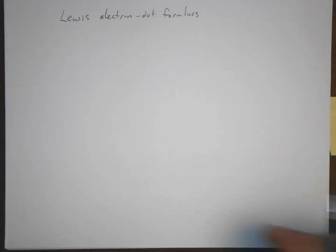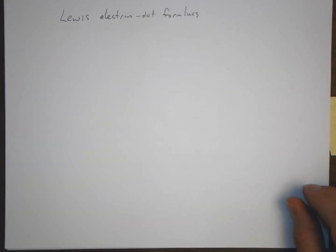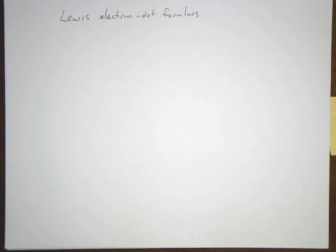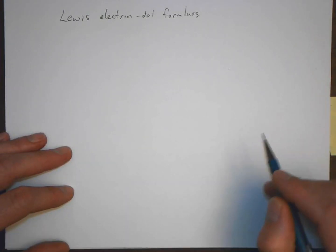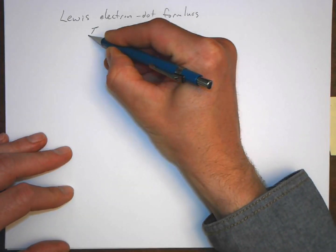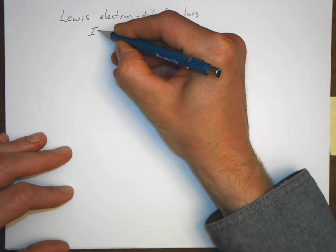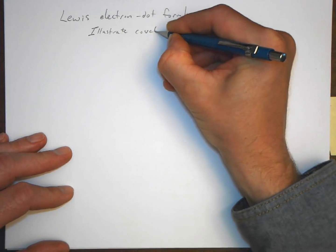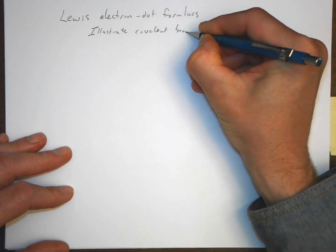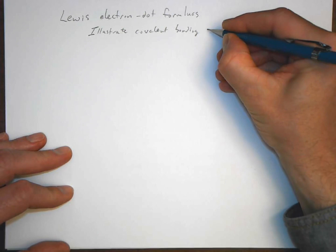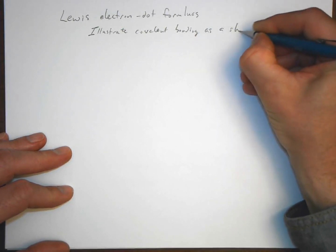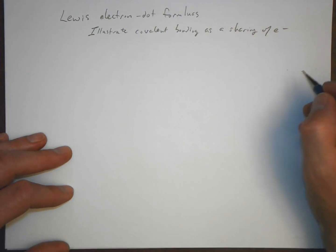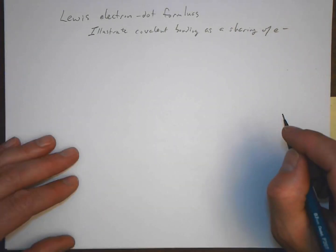This lecture is going to be about Lewis Electron dot formulas. We've seen a few of these already, and what we're going to look at here is how we obtain a structure. Lewis Electron dot formulas illustrate covalent bonding as a sharing of electrons. In other words, we're trying to have atoms attain their noble gas configuration.